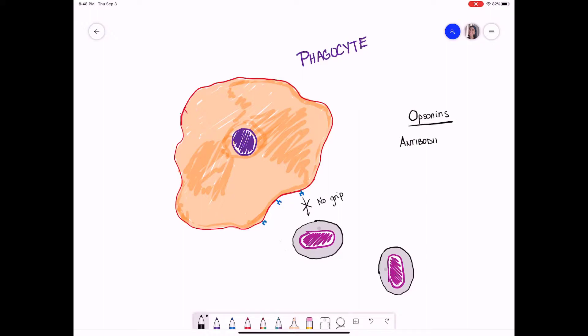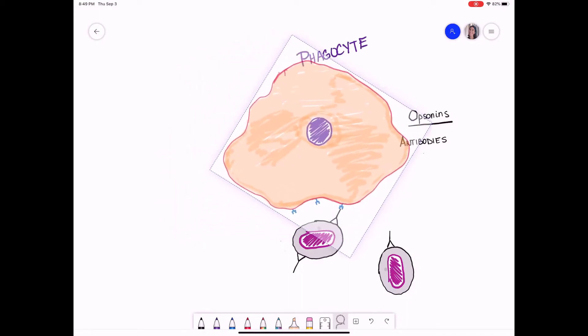Opsonins are molecules that are going to help the phagocyte somehow grip and or destroy the pathogen. A classic example of an opsonin is going to be an antibody. Antibodies are special immune molecules that we make upon exposure to a particular pathogen and those antibodies are going to bind to some specific molecule expressed on the surface of the pathogen. In this case the capsule. So once those antibodies bind to the capsule notice that the stems are sticking out. Well the phagocytes grippers are going to bind to those stems and that allows the phagocyte to get a good grip on the pathogen.